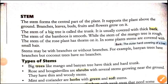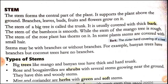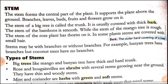Now children, the next part which we are going to study in detail is stem. First I will read and then I will explain. The stem forms the central part of the plant. It supports the plant above the ground. Branches, leaves, buds, fruits and flowers grow on it.